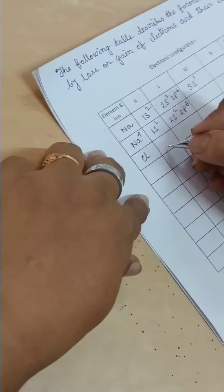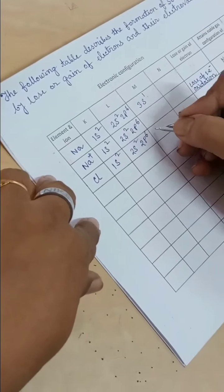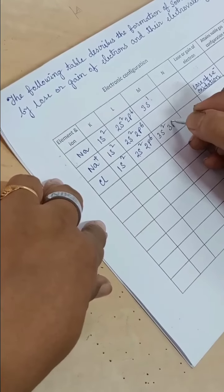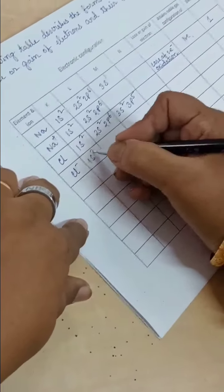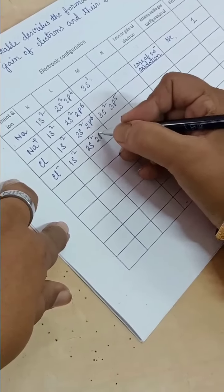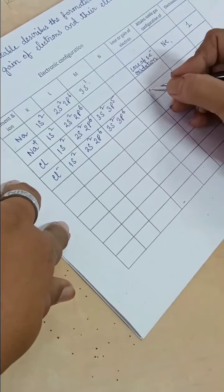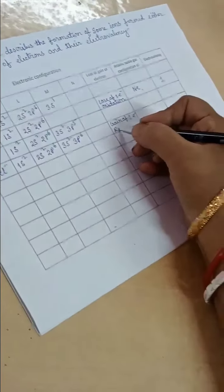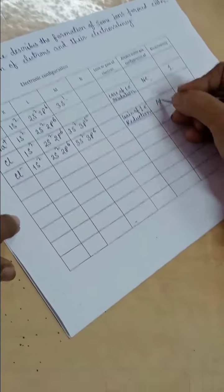Then chlorine: 1s2 2s2 2p6 3s2 3p5. Chlorine minus: 1s2 2s2 2p6 3s2 3p6. Gain of 1 electron, reduction, attains noble gas configuration of argon, electrovalency 1.